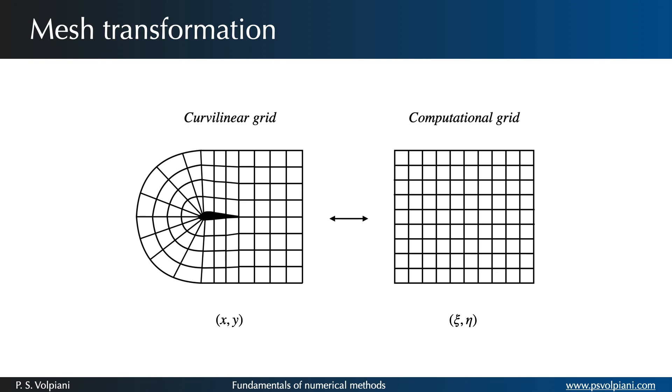The idea is to find the coordinate transformation which maps the physical domain into the needed computational domain, such that the uniform rectangular grid in the computational domain corresponds to a non-uniform curvilinear grid in the physical domain.